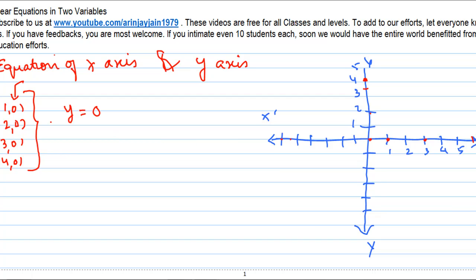Whether it be (1,0) or even if it were (-1,0), (-2,0), (-3,0), (-4,0) - always, always the value of y is equal to 0. So this becomes the equation of the x-axis.